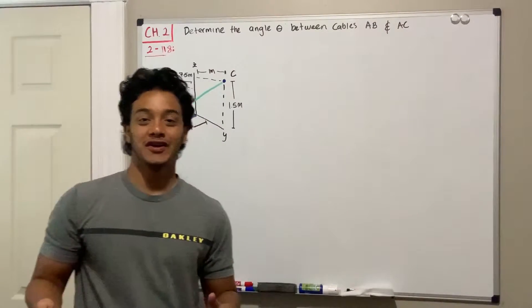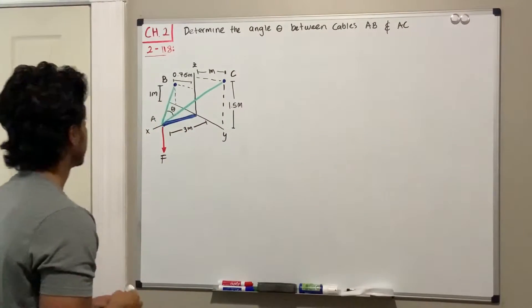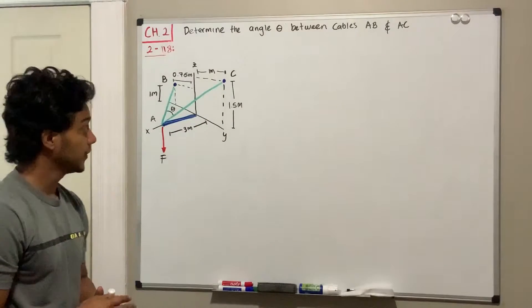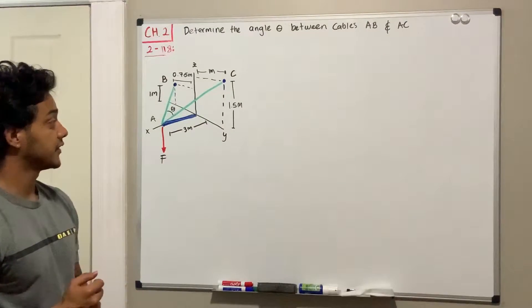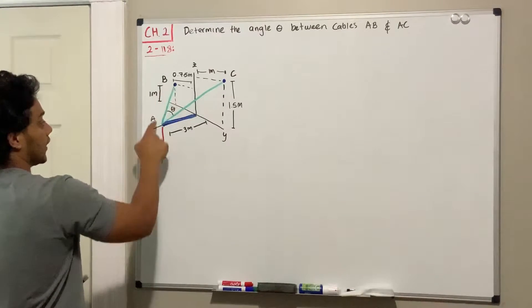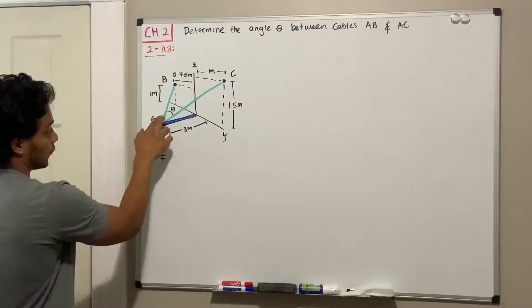Welcome back everyone to Learning by Teaching. We're in statics and we're going to do problem 2.118. It says determine the angle theta between cables AB and AC. We got these two cables AB and AC and we want